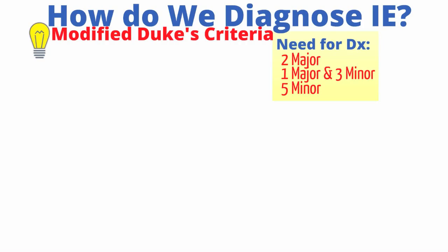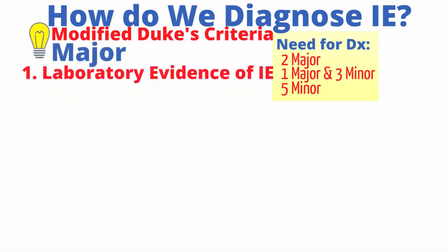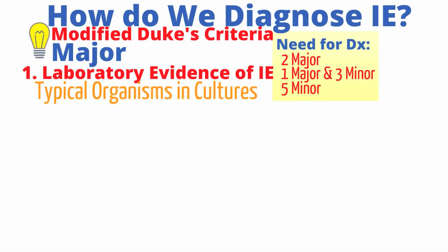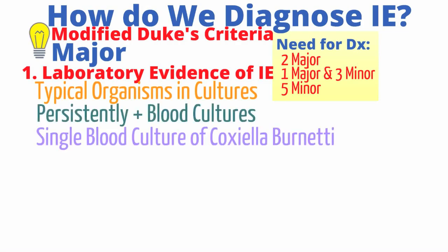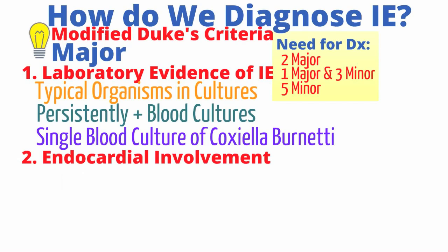How do we diagnose infective endocarditis? We start with clinical suspicion, but years of treating endocarditis have resulted in the modified Duke's criteria. The modified Duke's criteria include major and minor criteria — you need two major criteria, one major and three minor, or five minor criteria to make the diagnosis. There are three major criteria. The first is laboratory evidence: if two blood cultures grow organisms known to cause endocarditis, or if one blood culture is positive for Coxiella burnetii, that meets the requirement — especially with persistently positive blood cultures. The second major criterion is evidence of endocardium involvement.